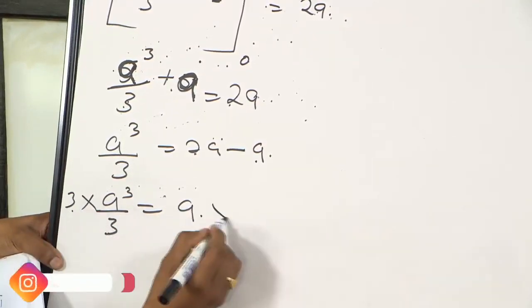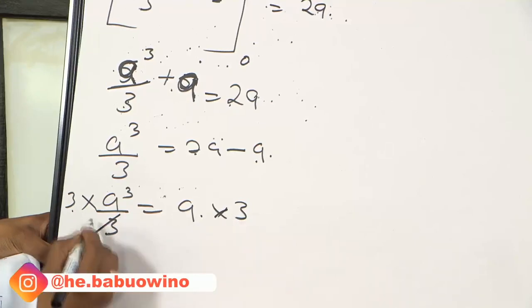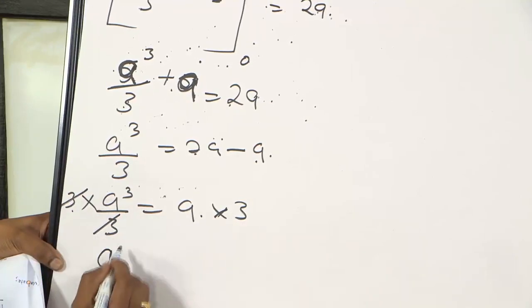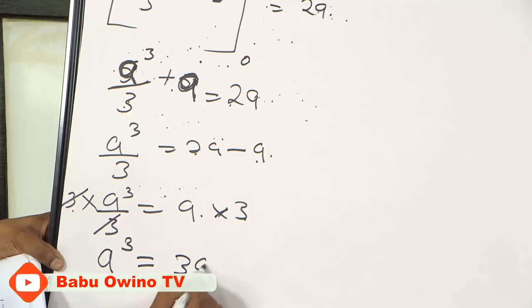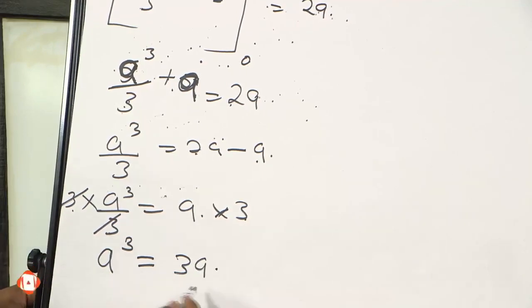Then cross multiply by 3. Cross multiply by 3 both sides. This 3 and 3 goes. Then we have A raised to power 3 equals to 3A.